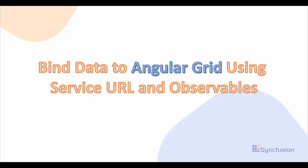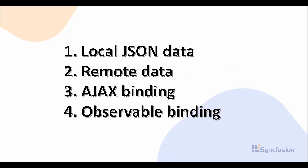Welcome back. In this video, let's see how to bind data to the Angular grid. You can either bind local JSON data or a remote service URL to the Angular grid. You can also bind data through an Ajax post, or bind observables to the Angular grid using async pipes. Let's start with binding data using code.